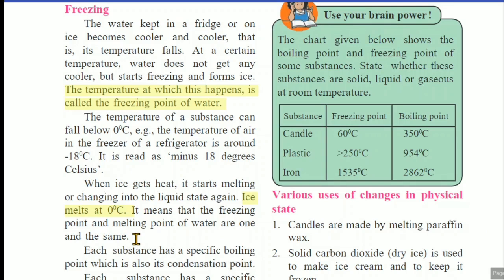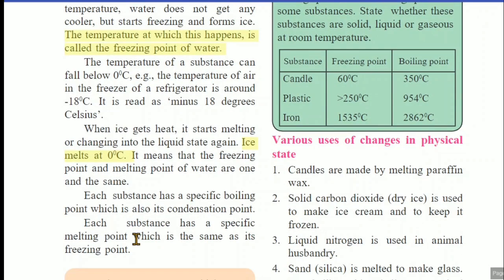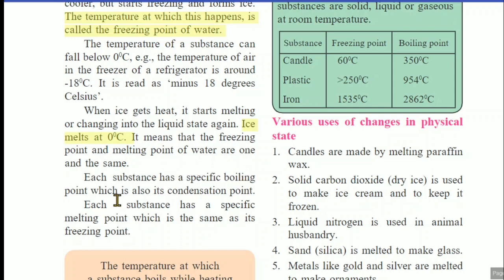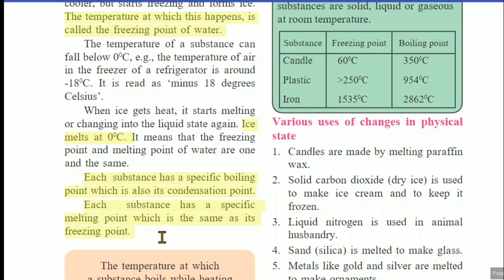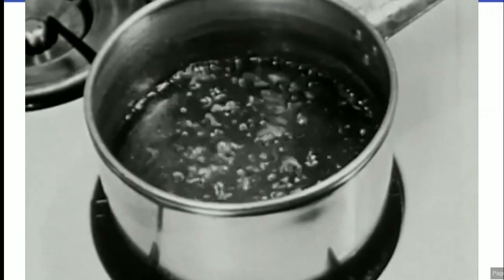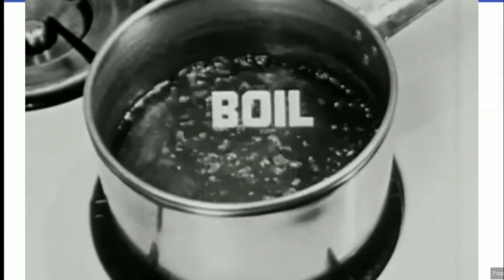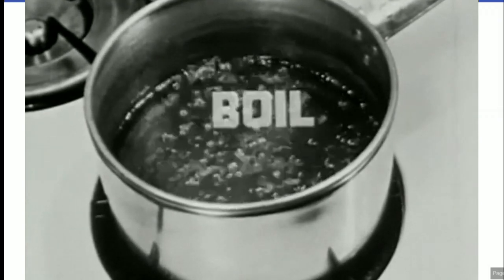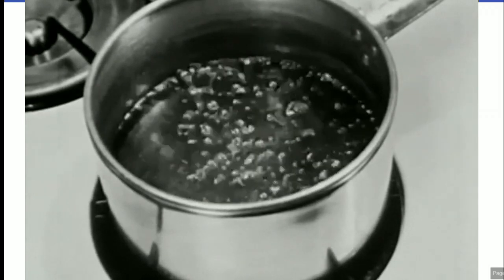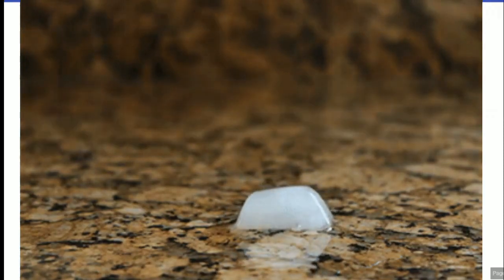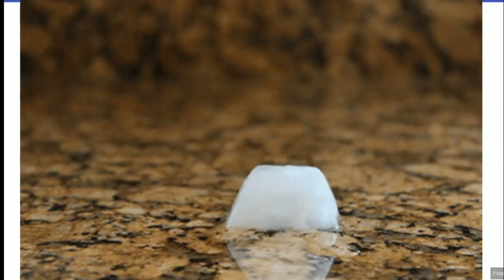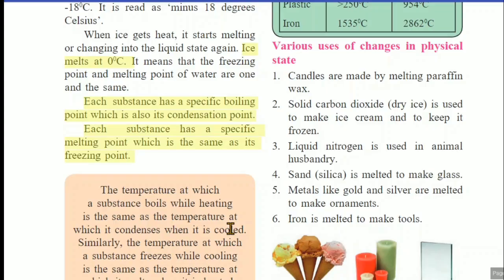At 0 degrees Celsius, both freezing and melting of water occur. Each substance has a specific boiling point, which is also its condensation point. Each substance has a specific melting point, which is the same as its freezing point. This is very important. Each and every substance has a specific boiling point, which is also called its condensation point — at that specific temperature, that liquid substance starts to boil. Similarly, each and every substance has a specific melting point at which it starts to melt, that is, from solid to liquid.